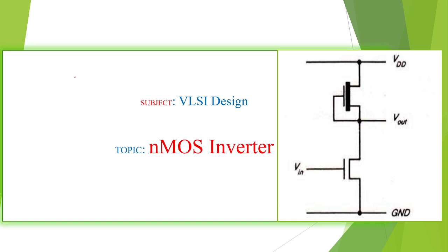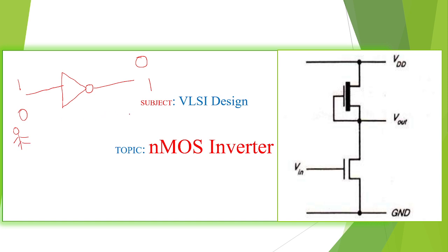I am going to explain about the NMOS inverter. We know the inverter function and its symbol. This is the symbol for the inverter. While giving input 1, the inverter gives output 0, and while giving input 0, the inverter gives output 1. So it gives the inverted output — that is the inverter function.